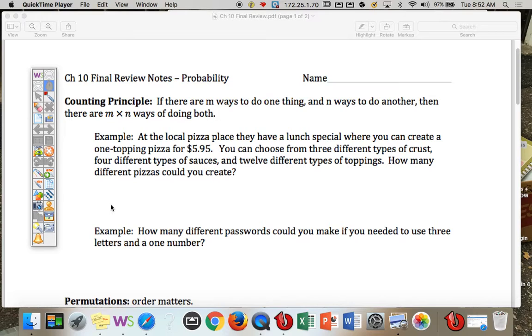So here's an example. At the local pizza place, you can have a lunch special where you can create a one-topping pizza for $5.95. You can choose from three different types of crust, four different types of sauces.